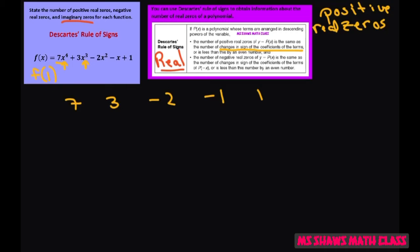And let's look at the sign changes. 7 to 3 does not change signs. 3 to negative 2 is a sign change. Negative 2 to negative 1 is not a sign change. And negative 1 to 1 is.